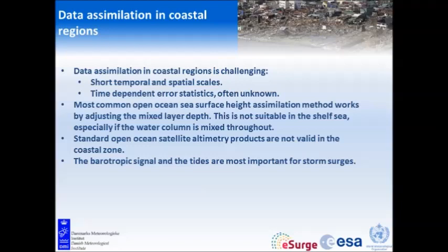The most common open ocean sea surface height assimilation method is to adjust the mixed layer depth, and that does not really work in a place like the North Sea where the water column is often mixed throughout. The standard open ocean satellite products give some really nice 2D maps that are often assimilated in open ocean models, but they're not really good in the coastal area. Within at least 50 kilometers of the coast you should not use them, and also not in areas with short-term variability.